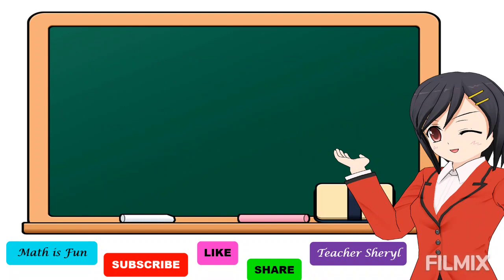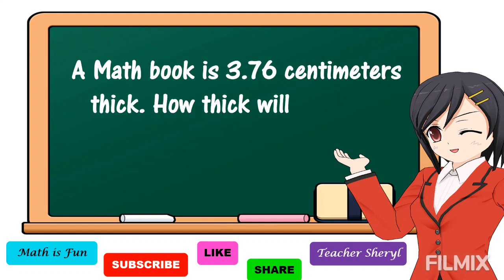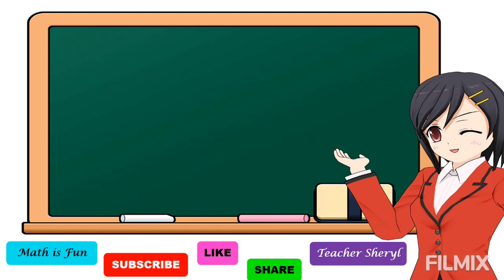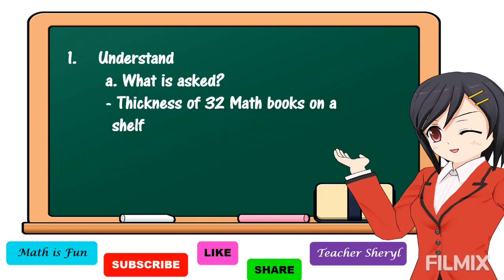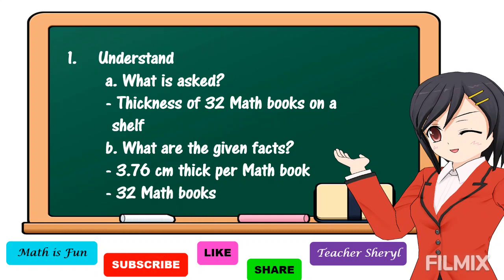For our first problem, it is a routine problem. A math book is 3 and 76 hundredths centimeters thick. How thick will 32 math books on a shelf be? To answer our problem, we need to understand what is asked. It is asking for the thickness of 32 math books on a shelf. The given facts are 3 and 76 hundredths centimeters thick per math book and there are 32 math books.